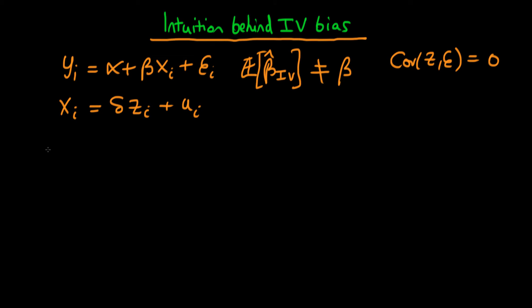Well if we knew the population parameter delta, this term here in our first stage regression, then we can actually produce an estimate of x, which I'm going to write x tilde, which would just be equal to delta times z. And then if we were to use that in our regression, we'd have y is equal to alpha plus beta x tilde plus epsilon.